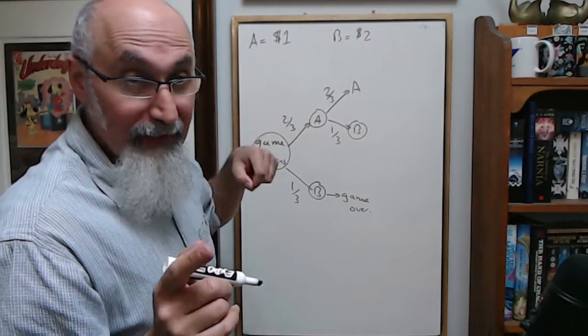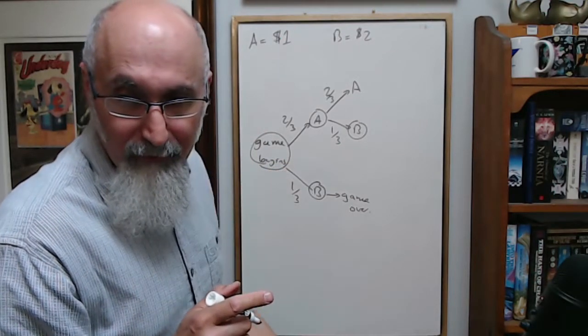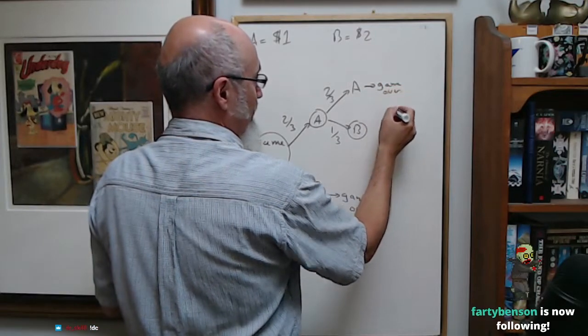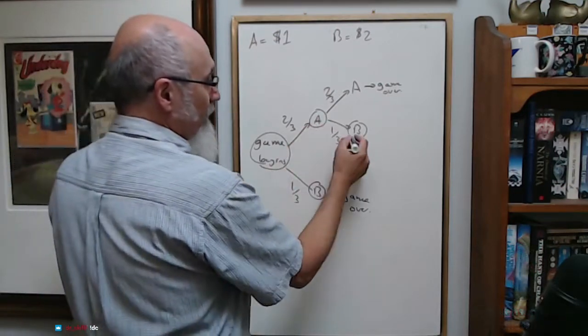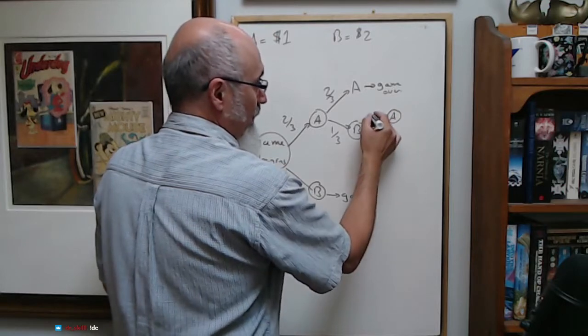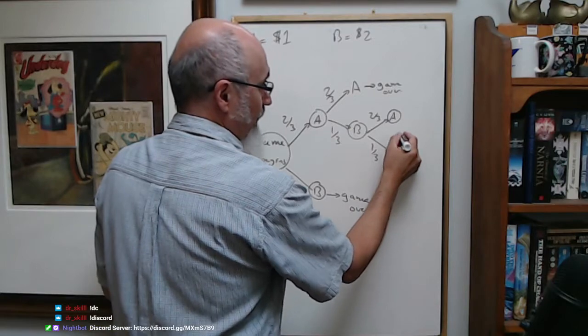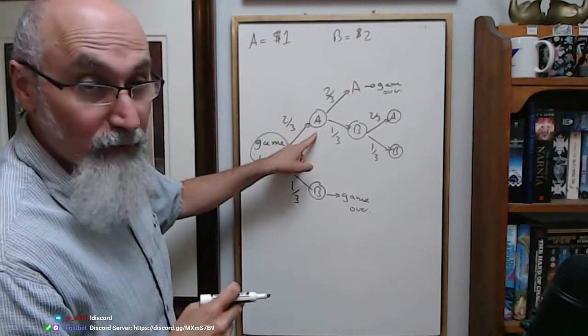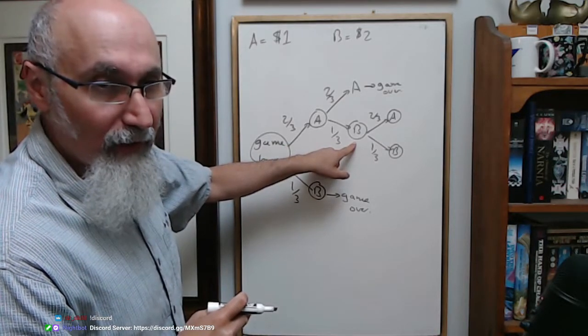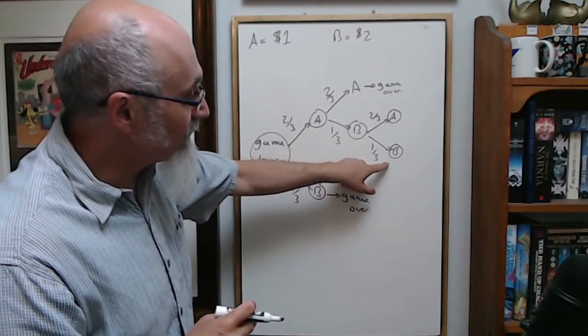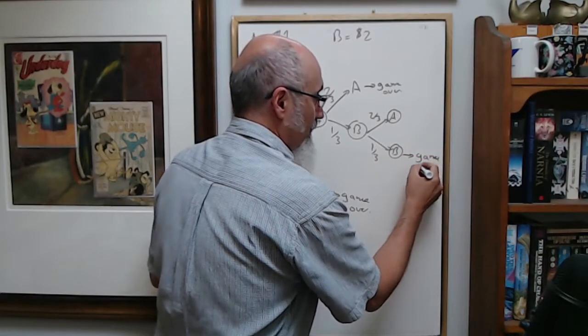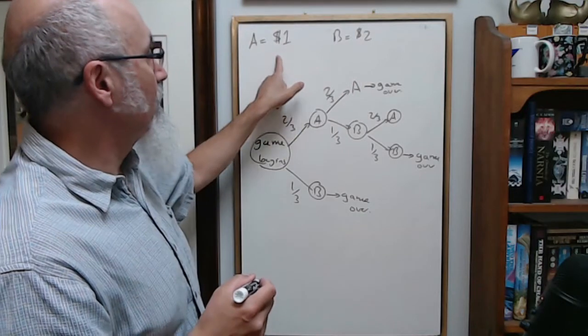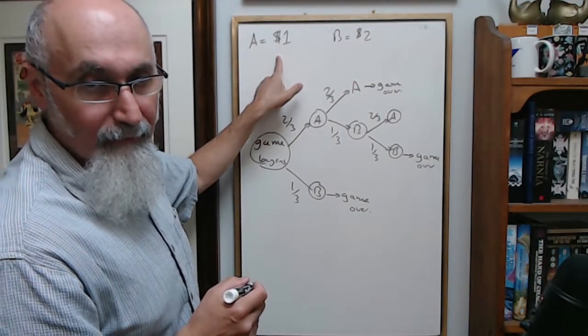A wins. This is where the problem occurs. If you go down here, then you can play the next round, two-thirds and one-third. If this occurs, Person B wins. Check this out: Person B wins, so Person A had $1, he had $2, then Person B had $1. They're back to the original. If Person B wins again, game over.